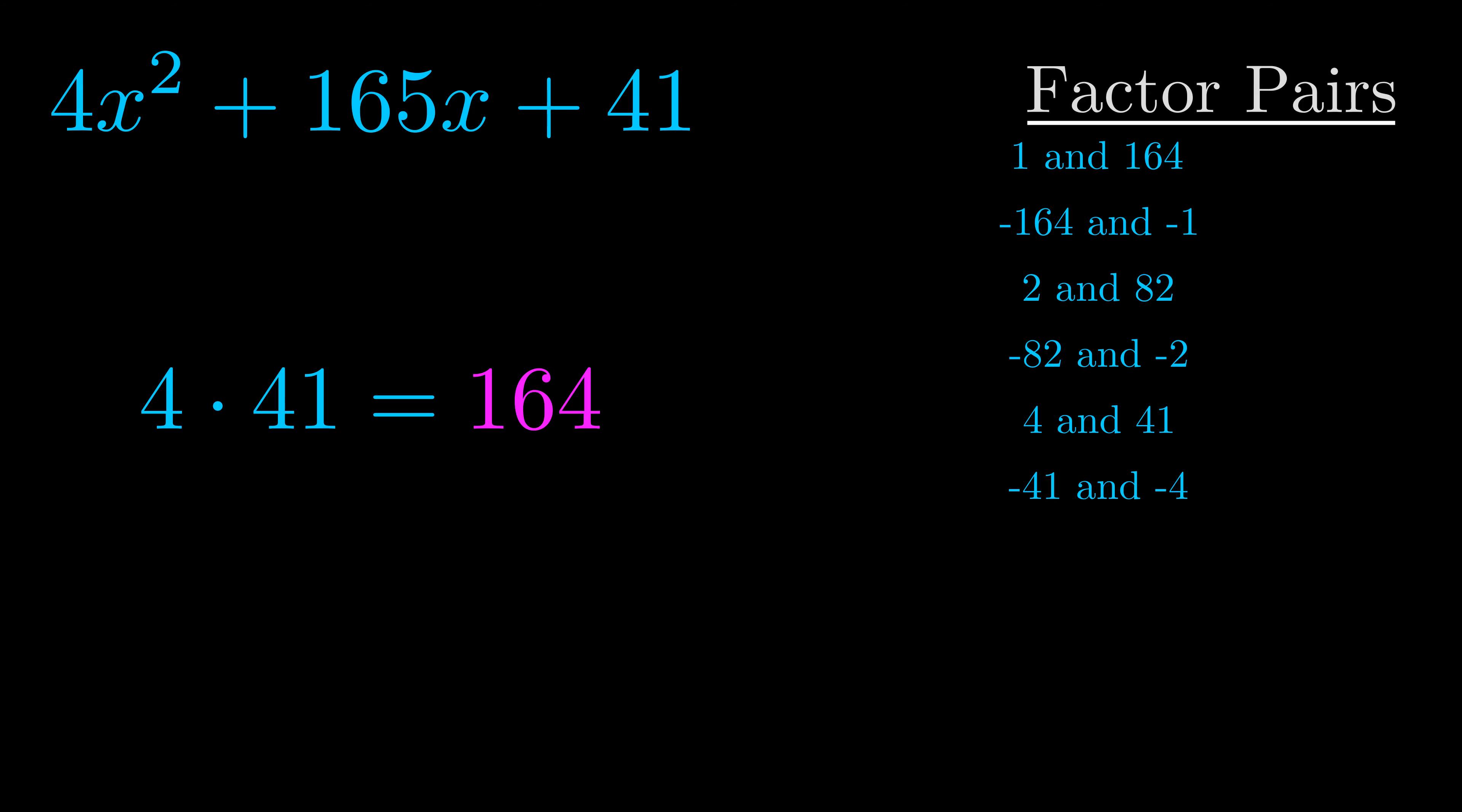The b value is the coefficient on the x term. That's the middle term, the one that we haven't done anything with yet. And really this is the only factor pair that we need.